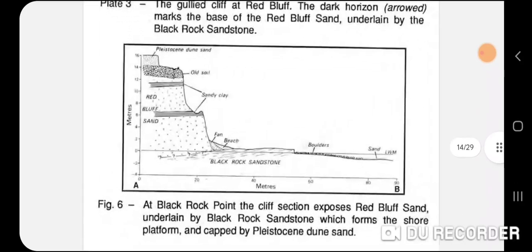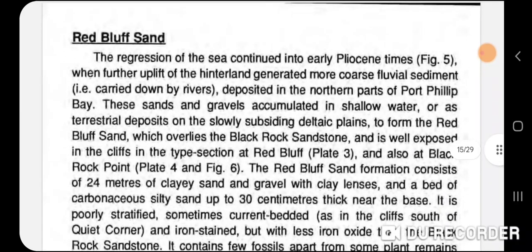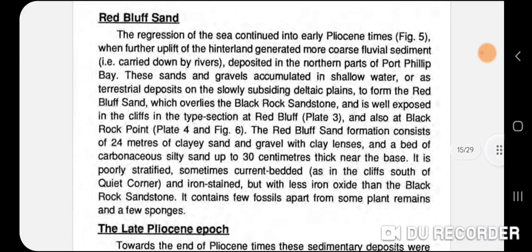There's another cross-section at the coastal area. As you can see the Red Bluff does have sandy clays with soils on top. The Black Rock Sand is a lot lower but quite eroded at that location. Information on the Red Bluff Sand describes a regression of sea level continuing, with a shallow-water environment and terrestrial deposits on the slowly subsiding deltaic plain, forming the Red Bluff Sand which overlies the Black Rock.